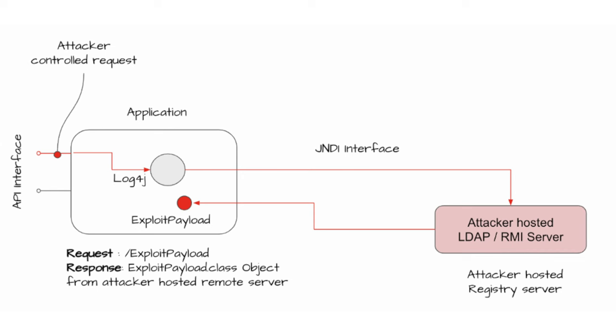Attackers can pass a malicious JNDI URL into any input field that gets logged by log4j. When the logger processes that input, it executes the JNDI lookup, fetches the malicious object from the attacker's server, and runs it — potentially harming your application. This is why the exploit is also called Log4Shell: because you can execute commands directly on the server. This is not the first vulnerability found in a Java library, but because it enables remote code execution, it is one of the most severe types of security breaches.